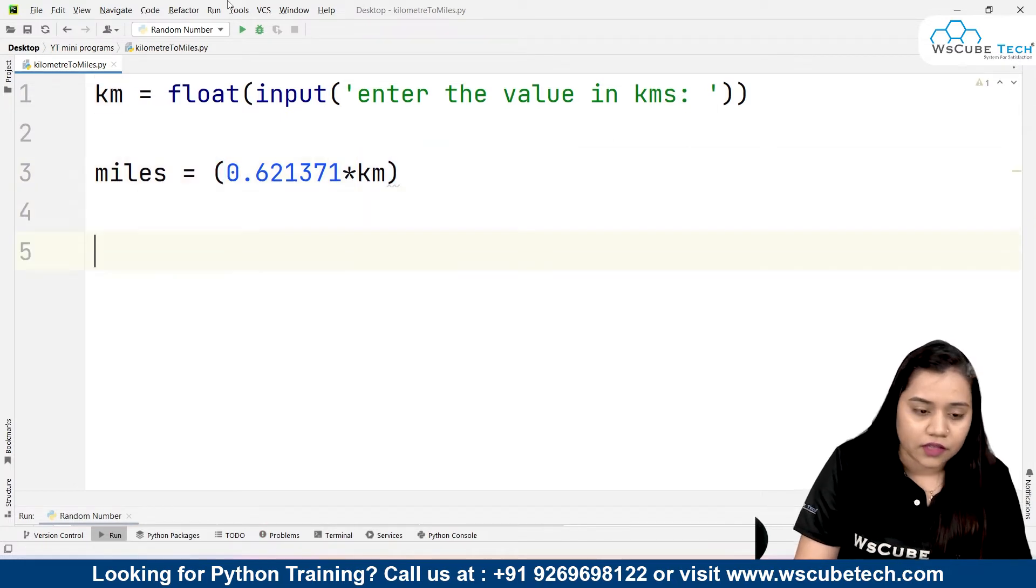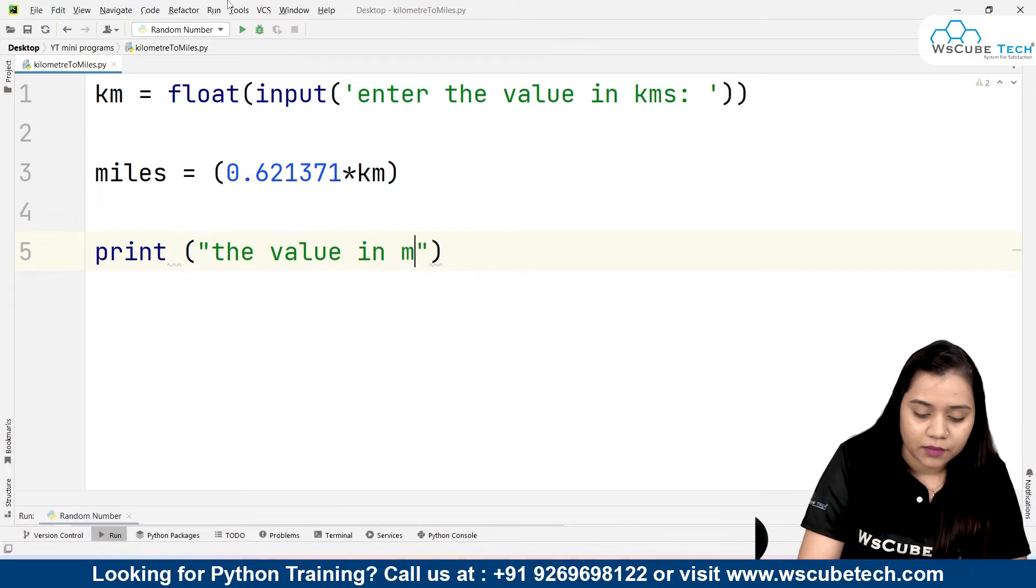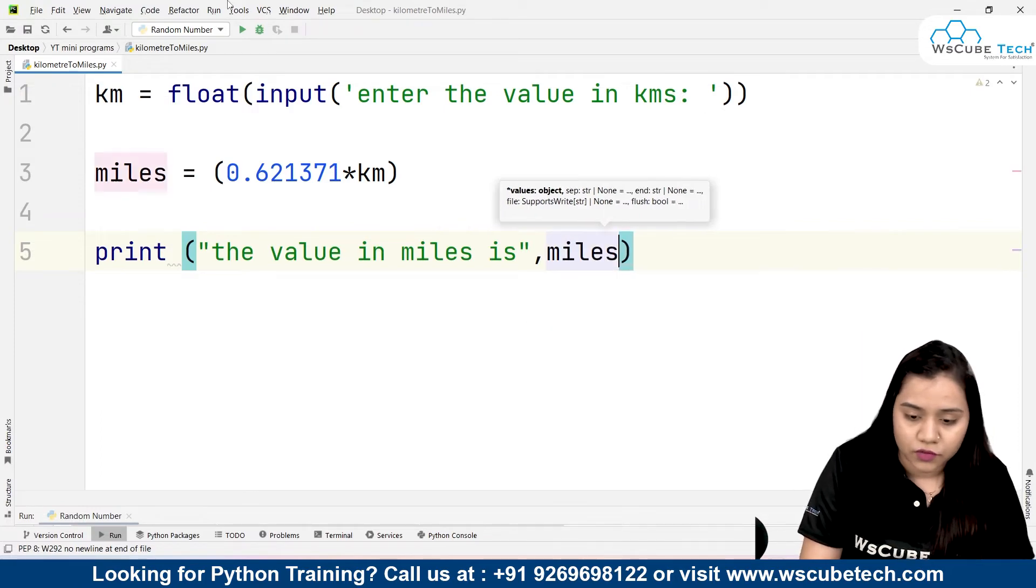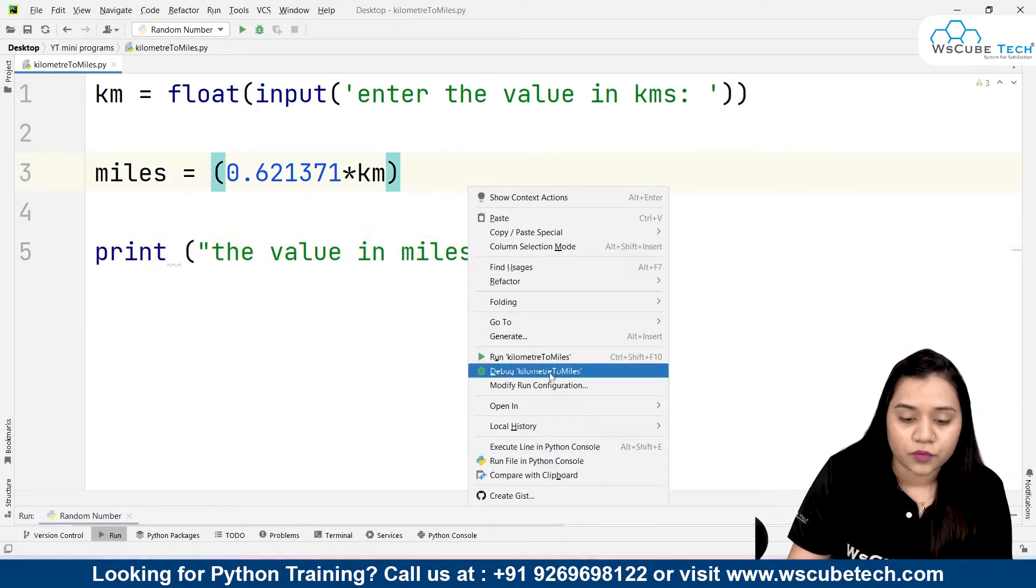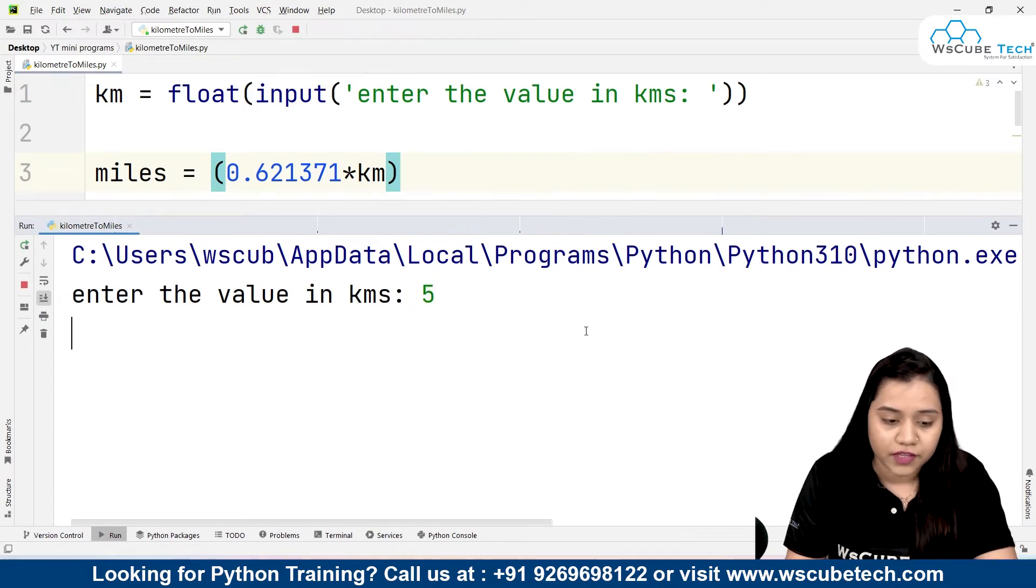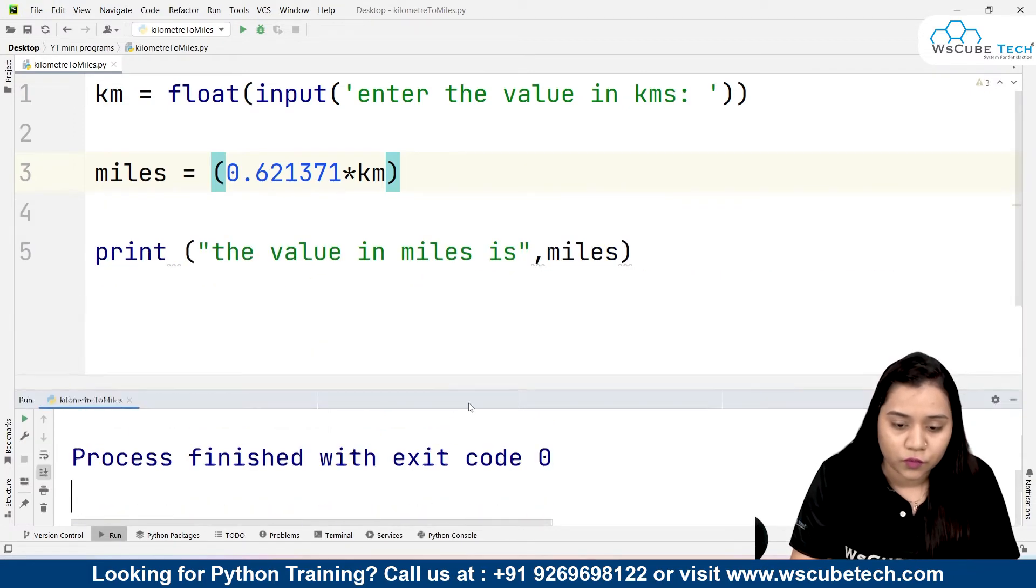This will be multiplied with km. You can put it inside brackets if required, but it is not mandatory. Then we will be printing the value in miles. We'll put a comma to separate the string with the variable, and then we will write miles. As soon as I run this program, it says enter the value in kilometers. If I write five, it will give me 3.10685 miles.